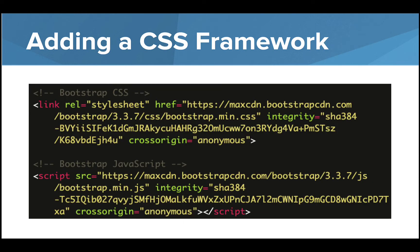Tailwind also makes it easy to remove any CSS not used in your web project to reduce website loading time. A CSS framework can easily be added to your web projects using a stylesheet link and a JavaScript CDN, or content delivery network link. These links are placed within the head tag of your HTML file. Here you can see the stylesheet link called for the Bootstrap CSS framework, and below that is the Bootstrap JavaScript. Creating a web project on CodeHS, these links are added to the HTML template provided so you can quickly begin using Bootstrap components and styling.